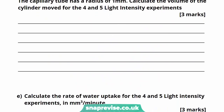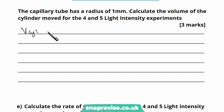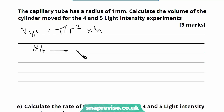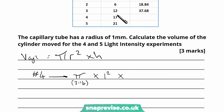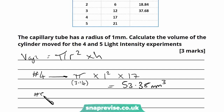To calculate the volume of the cylinder moved, remember the formula: volume = π r² h, where r is the radius and h is the height or length of the cylinder. For light intensity four, that's π × 1² × 17 mm, which gives 53.38 mm³. For light intensity five, it's π × 1² × 21 mm, which gives 65.94 mm³. Leave answers to two decimal places to match how the other values in the table were presented.